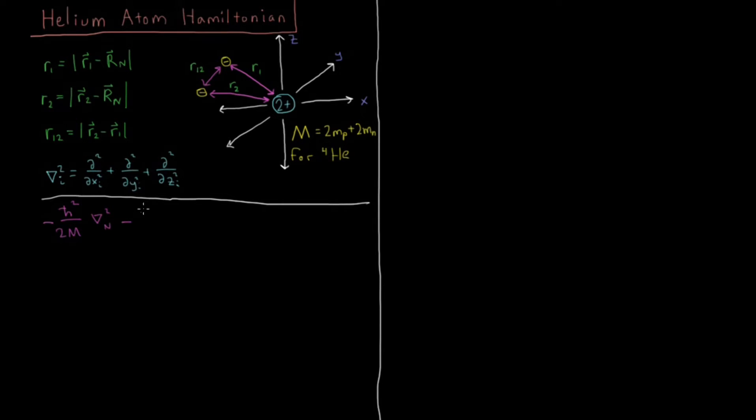Then we have kinetic energy for each of the electrons. Minus h-bar squared over 2mE, del squared of electron 1, and minus h-bar squared over 2mE, both of them weighing the same, times the Laplacian for electron 2.